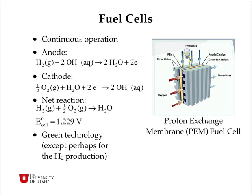Fuel cells are similar to voltaic cells except that you have a continuous flow of oxidizer and fuel to produce electricity. The hydrogen-oxygen fuel cell is the most common type, and you can see the half reactions that occur at the anode and the cathode. The net reaction is the conversion of hydrogen and oxygen gas to water, and that has an overall cell potential of 1.229 volts under standard conditions. This is a very green technology because you're starting with hydrogen and oxygen and producing water at a very low temperature, essentially room temperature, and not producing any carbon dioxide or any other pollutants.